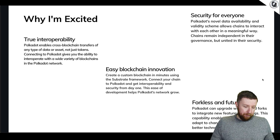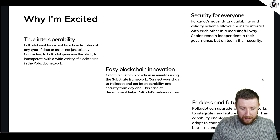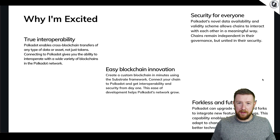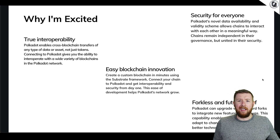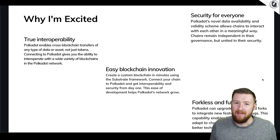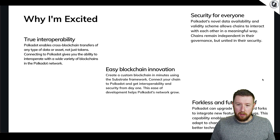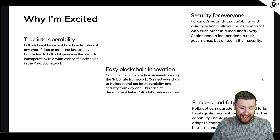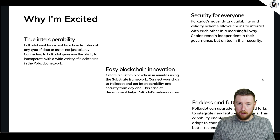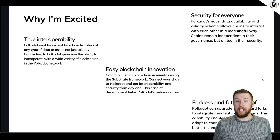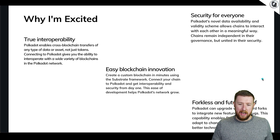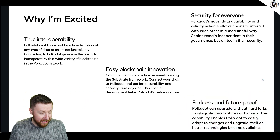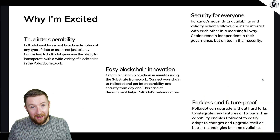Another one is security. The security mechanism of the layer zero enables everything to be bonded together. One big flaw of Ethereum is you see all these DeFi protocols get rug pulled because they're not the greatest in terms of security. With Polkadot it's totally different - it's a layer on its own on the full ecosystem where they can all share security, which is important.